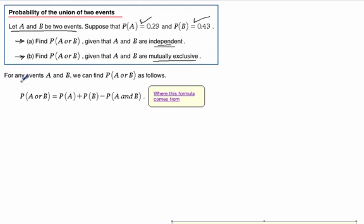All right, so let's take a look at this. Here's a nice thing. We have a formula. For any events A and B, we can find the probability of A or B as follows. This is a formula. Formulas are nice because all we have to do is understand the parts, plug them in, and get our answer.